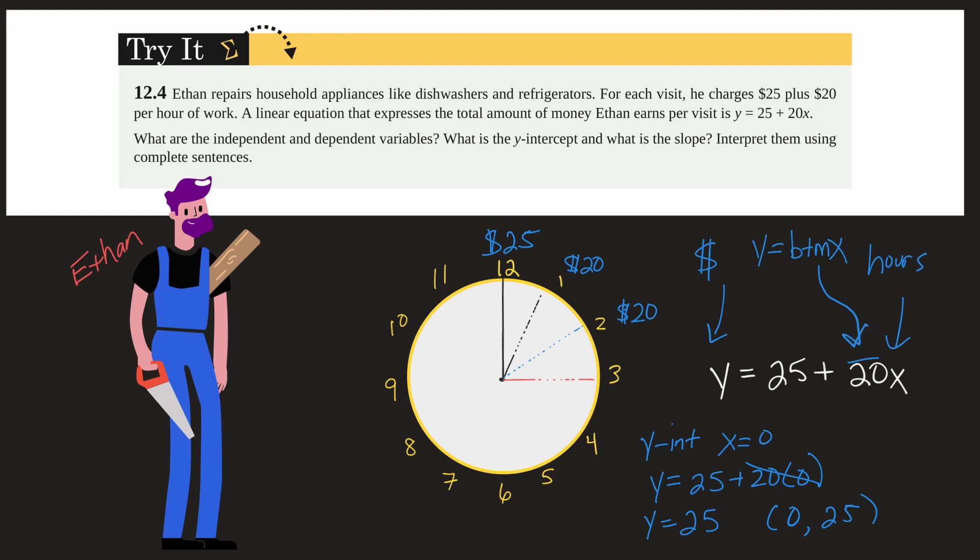What does that represent? Well, that is his fee over time or per unit of time. And that per unit of time is the slope of the line. So independent variable is hours or time. Dependent variable is the money. The y-intercept is the point 0, 25. And the slope of the line, that's the amount of money he earns per hour, is 20 or $20.